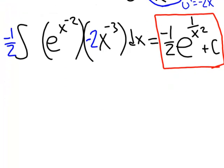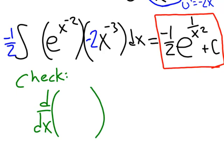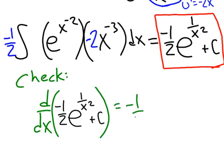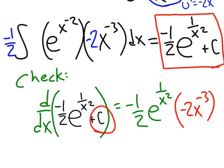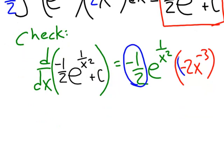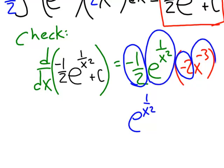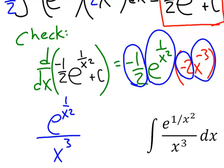To check, we differentiate our answer. That gives us the constant negative 1 half, times e to the 1 over x squared, times the derivative of the exponent. Thinking of 1 over x squared as x to the negative 2, the derivative is negative 2x to the negative 3. The negative 1 half and negative 2 result in 1, times e to the 1 over x squared, and x to the negative 3 goes to the denominator as x cubed. That matches our original integrand, so this one is done.